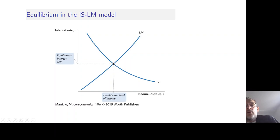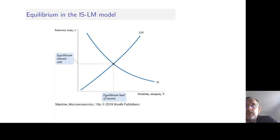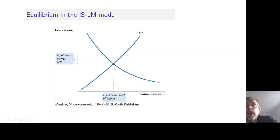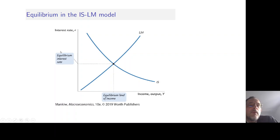The IS curve is downward sloping in the interest rate-output diagram, and the LM curve is upward sloping. What is new in the IS-LM model is that we can determine two endogenous variables at the very same time: the interest rate and output. In chapter 11, we were only able to determine output in isolation, or the interest rate in isolation. But here we are able to determine the equilibrium level of income and the interest rate simultaneously — this is the new aspect of this model.